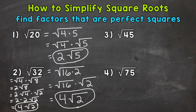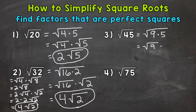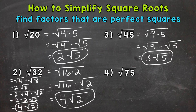Let's move on to number 3, where we have the square root of 45. Think: any factors that are perfect squares? Yes — 9 and 5 are factors of 45. 9 times 5 equals 45, and 9 is a perfect square. So the square root of 45 equals the square root of 9 times 5. Let's split: the square root of 9 times the square root of 5. The square root of 9 is 3. Bring down our square root of 5 — that cannot be simplified any further. So we have 3 times the square root of 5, or 3 square root 5, or 3 root 5.